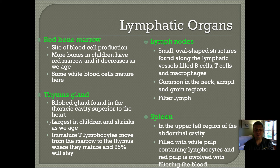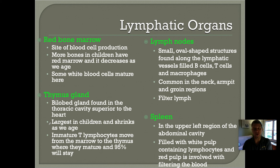Children tend to have red bone marrow in most of their bones, but adults generally only have it in their large bones, including the sternum, the ribs, the humerus (the upper arm bone), the femur (the upper leg bone), and some parts of the pelvis. It decreases because children have the least developed immune system, so it makes sense for them to have more bone marrow than adults.